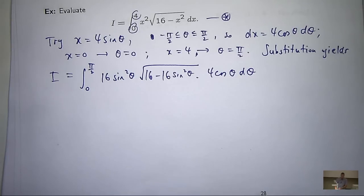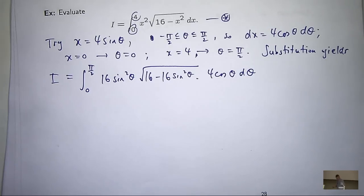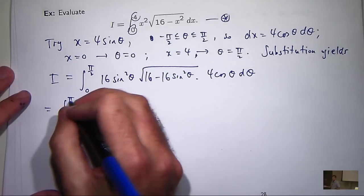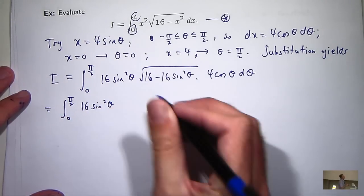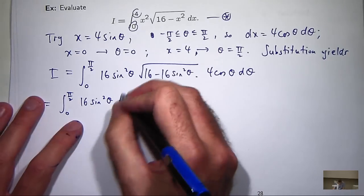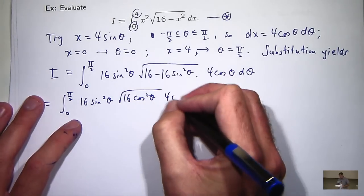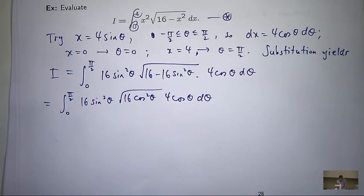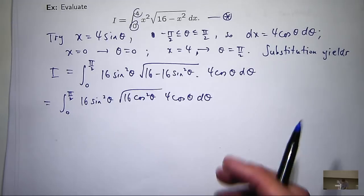So what can I replace 16 minus 16 sine squared theta with? Yeah, 16 cos squared theta, right? And then take the square root. So if I factor that out, well, let's just do it. All right, so now I can eliminate that square root sign. And I'm going to get something like 16 sine squared theta times 16 cos squared theta, right?